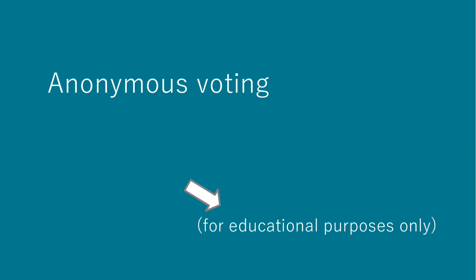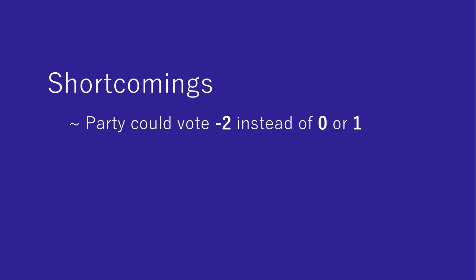Now, this example was for educational purposes only, because there are a number of shortcomings that you may have already spotted. First, there is no verification of the secret polynomials used by the different parties. For example, Sully could have set his polynomial to evaluate to minus 2 on x is 0, completely ruining the result of the vote.